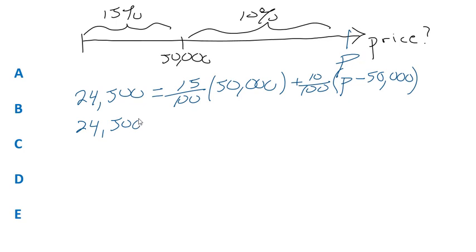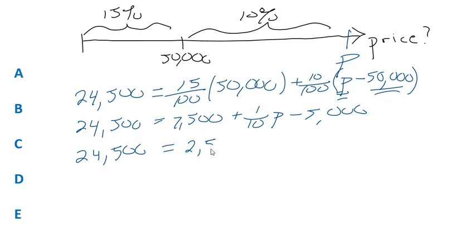So now our formula looks like what? 24,500 equals 7,500 plus 10%, one-tenth of P, one-tenth of the whole quantity, P minus 50,000. So we'd be subtracting one-tenth of 50,000. We'd be subtracting 5,000. Now let's simplify all this. On the right, 7,500 minus 5,000, 2,500 plus one-tenth of P, one-tenth of the total price.